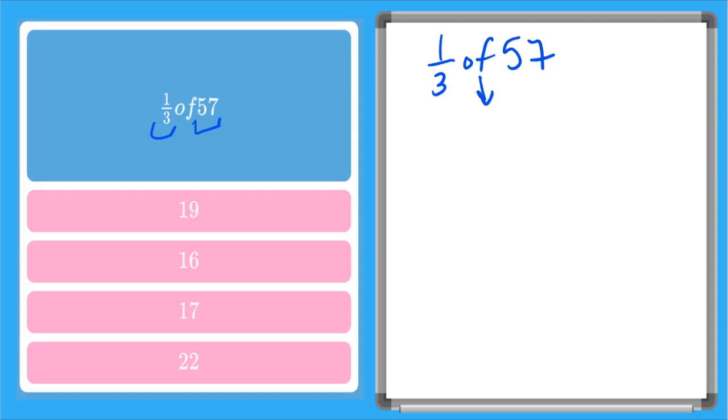I'm rewriting my of as a multiplication sign. So I have one-third times fifty-seven. I'm going to rewrite my whole number fifty-seven as a fraction. So I just put a one in the denominator.